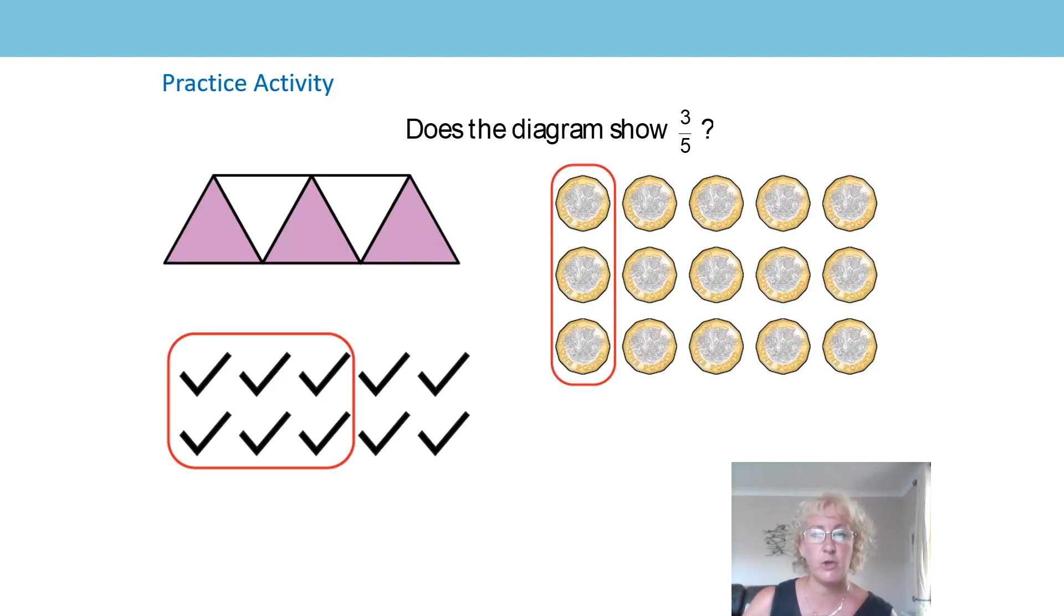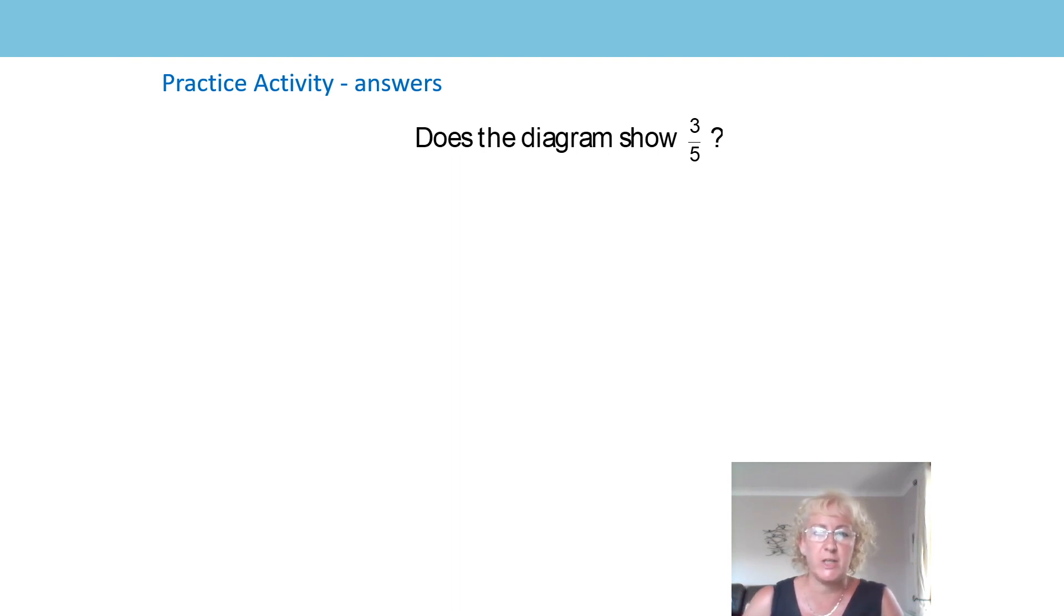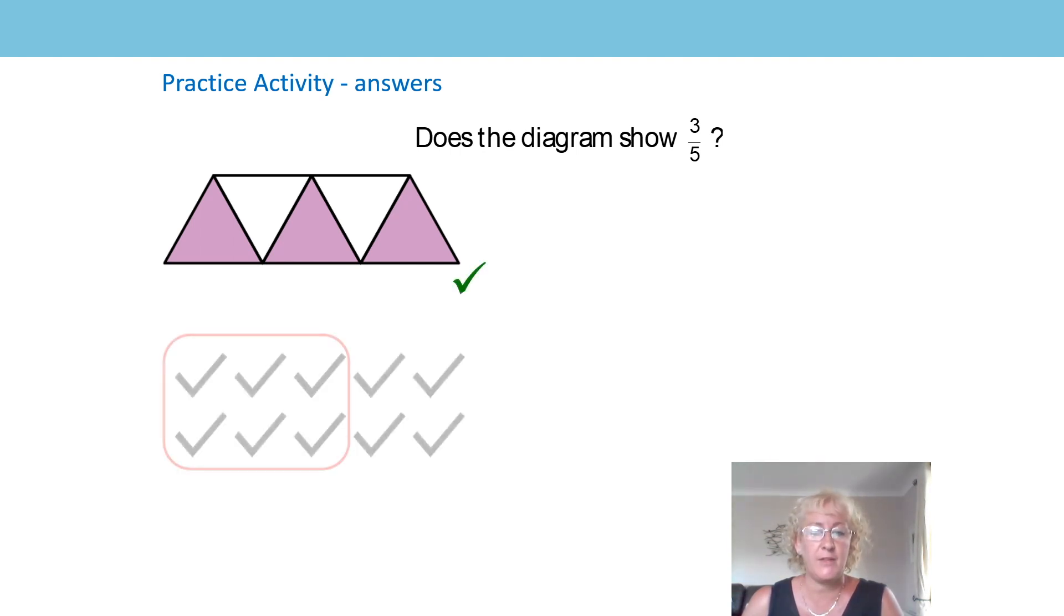So my next slide is for you to have a go yourself with these three different diagrams and these three questions. Each time I want you to think carefully about whether the diagram shows three fifths. You can pause your video now so that you can have a chance to have a good think about those three questions and we'll go through them in a moment. Let's start with our triangles. Here we've got five equal parts and three of them are shaded. So that means, yes, it does show three fifths.